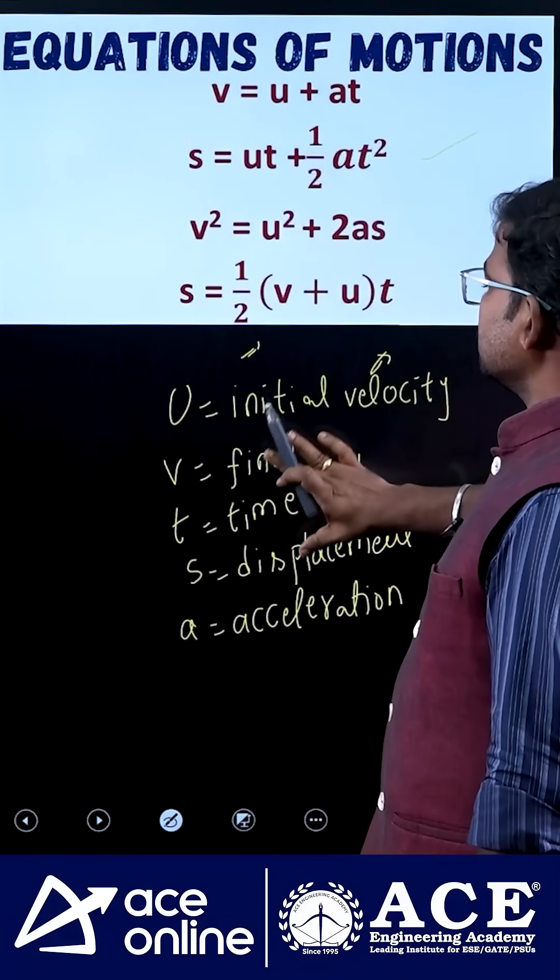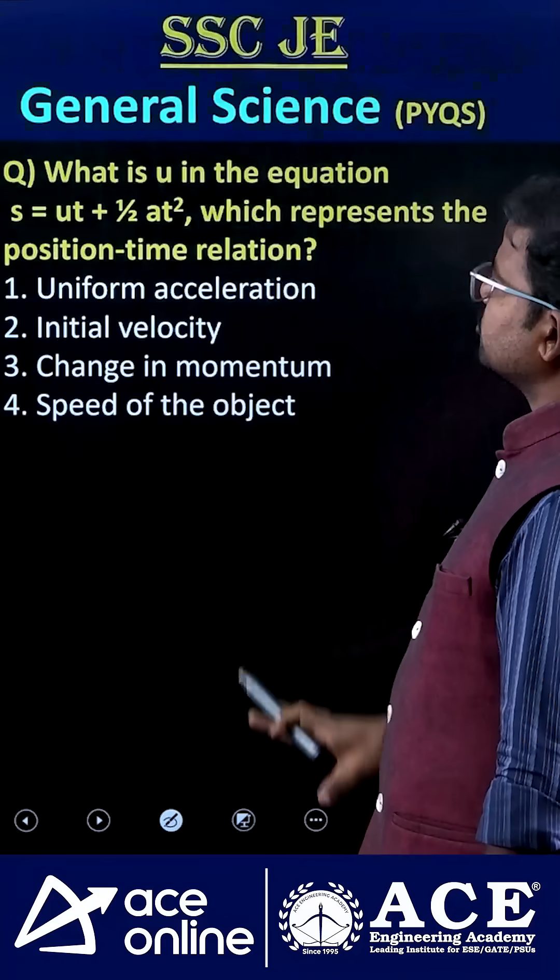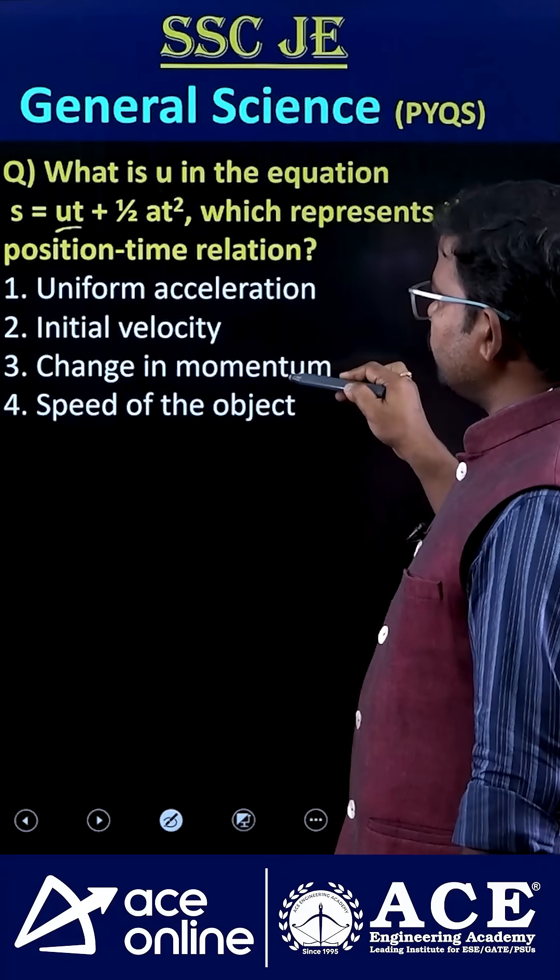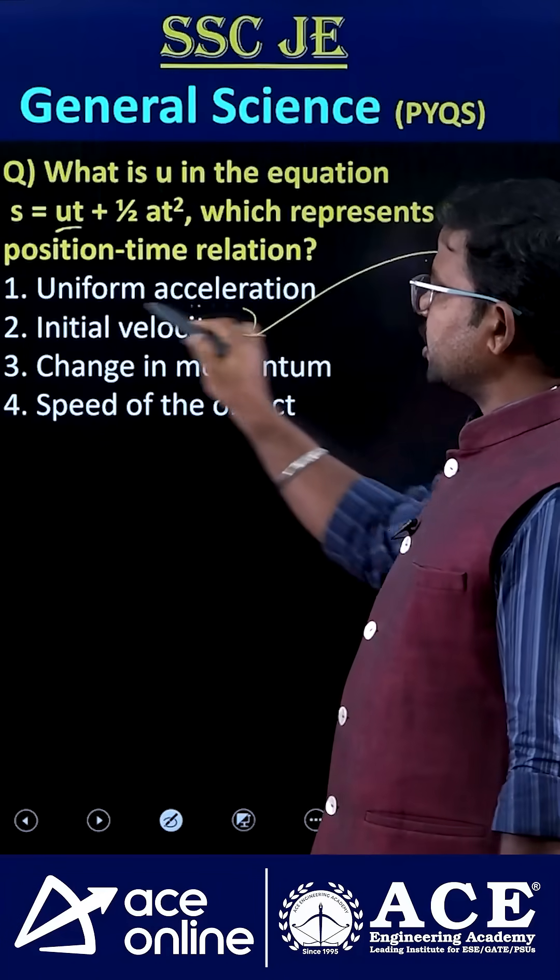So these are the meanings of given terms. That's why here u indicates initial velocity. Option 2 is the correct one.